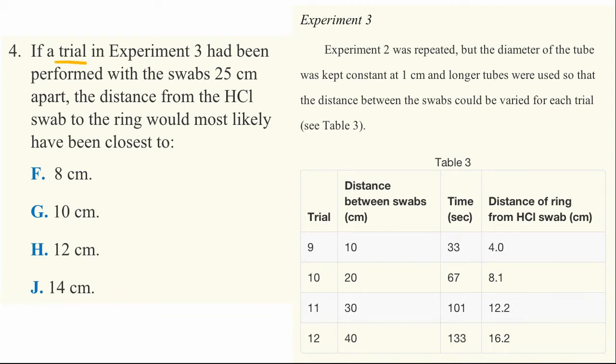If a trial in Experiment 3 had been performed with the swabs 25 centimeters apart, the distance from the HCl swab to the ring would most likely be. This is the distance from the HCl swab to the ring would most likely be.